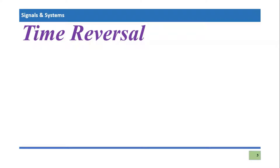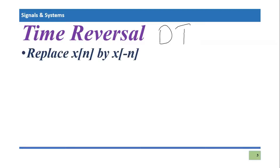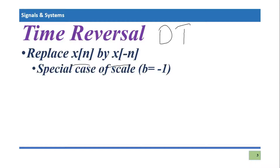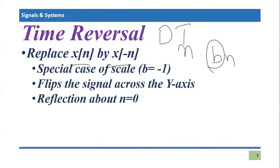Assalamu alaikum everyone. In this video tutorial I'm going to talk about time reversal of signals in discrete time domain. In the last video I discussed continuous time domain, so now I'll cover discrete time domain. Basically, in time reversal you replace x(n) by x(-n) — wherever you find a discrete time variable n, you replace it by -n. This is a special case where b equals -1, since in time scaling we replace n by b*n, and for time reversal b equals -1.